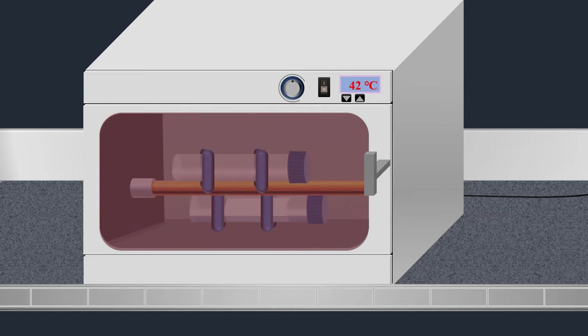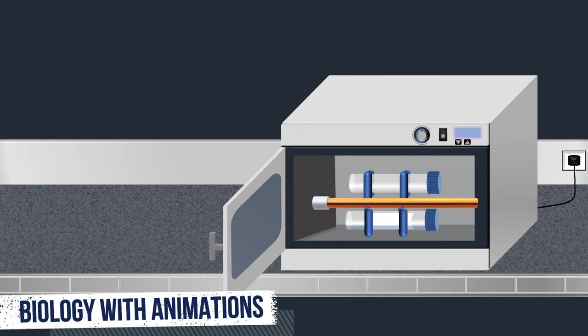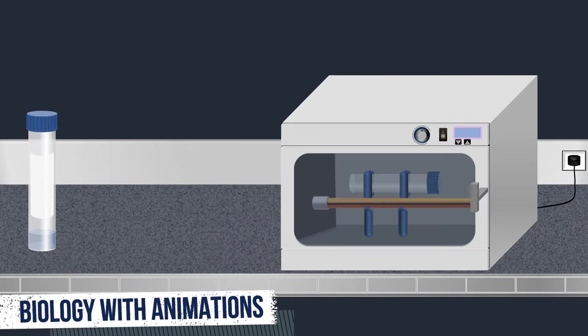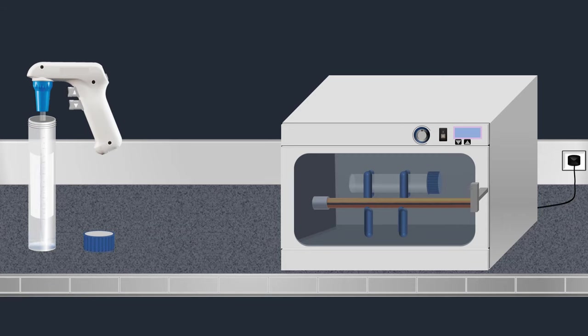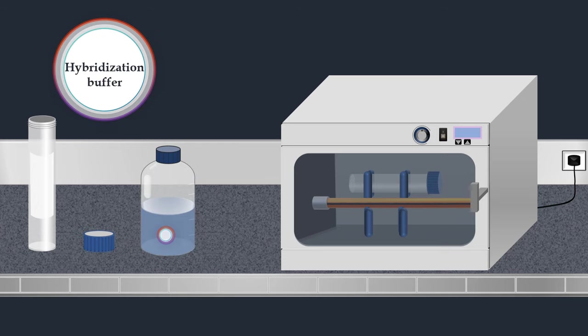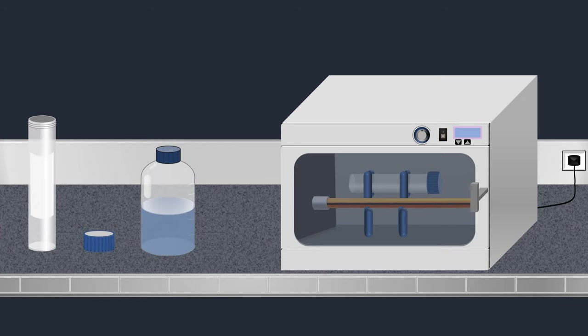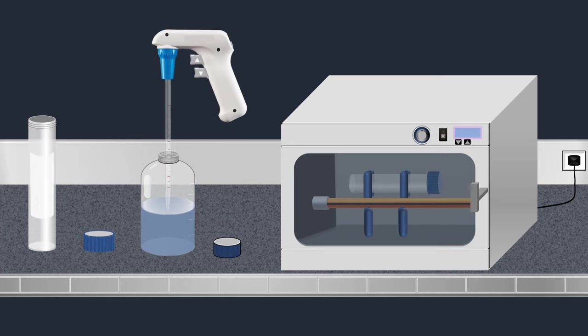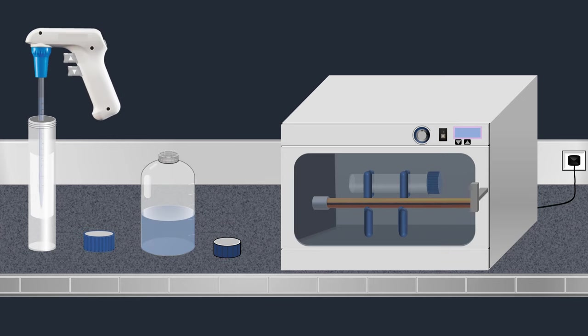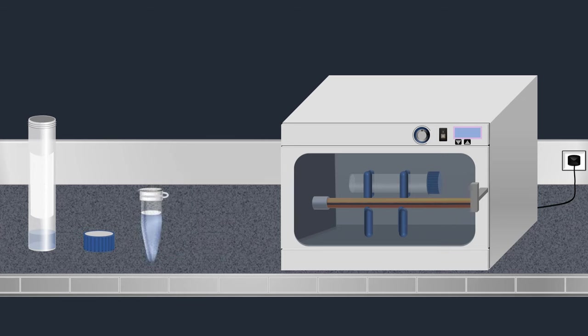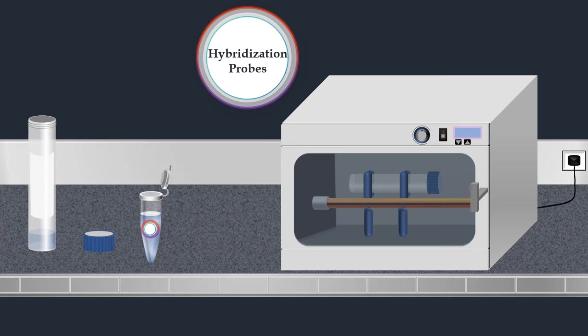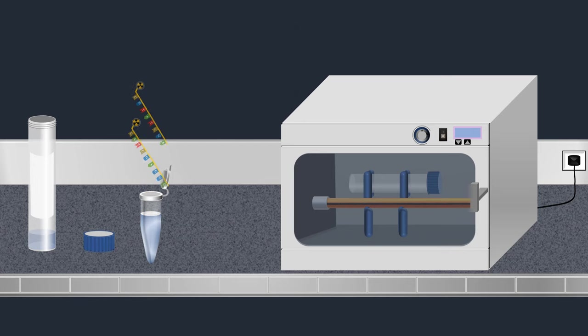Once the incubation is complete, the pre-hybridization solution is removed. Then a hybridization buffer is added into the bottle. Next, labeled DNA probes are added to the hybridization solution. The probes are fragments of DNA of variable length which can be radioactively or fluorescently labeled.